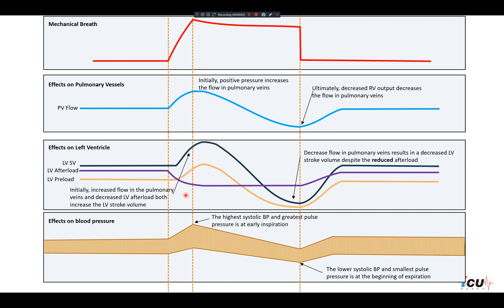The third graph represents the effects on the left ventricle, showing left ventricular stroke volume, afterload, and preload. The left ventricular preload is similar to pulmonary vein flow: preload is increased in early inspiration, but in late inspiration it goes down. The afterload is decreased as a result of the gradient between intrathoracic and extrathoracic structures, in addition to the decreased transmural pressure and tension on the ventricular wall. This decreased afterload is maintained throughout inspiration.